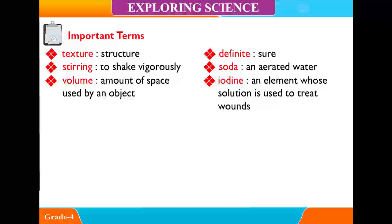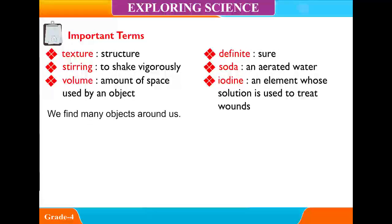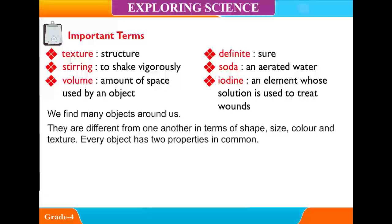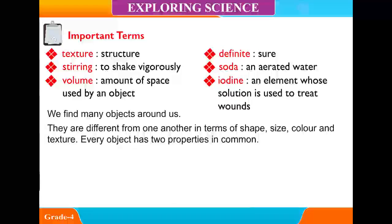Iodine: an element whose solution is used to treat wounds. We find many objects around us. They are different from one another in terms of shape, size, color and texture.